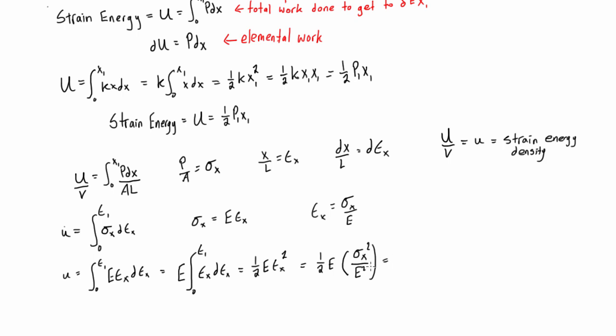And we can simplify this, we have one E in the top, two on the bottom. And then let's just rewrite this a little bit cleaner. So we'll have sigma x squared over two E.